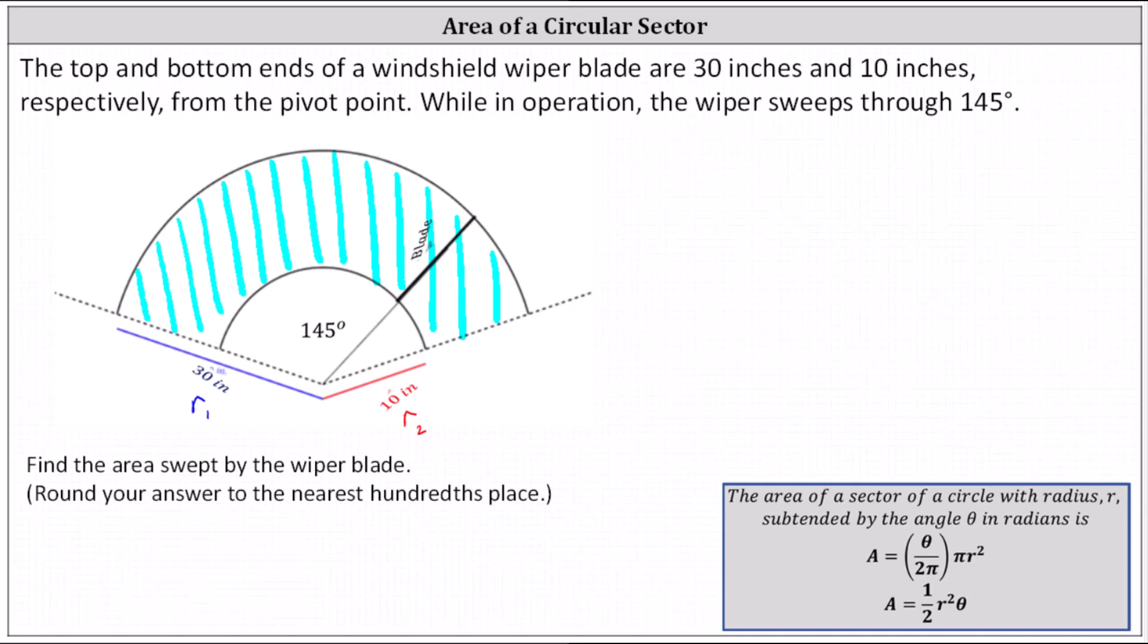The area of the shaded region, or the area swept by the wiper blade, A, is equal to the area of the sector with a radius of 30 inches, which is one-half times the square of r sub 1 times θ.